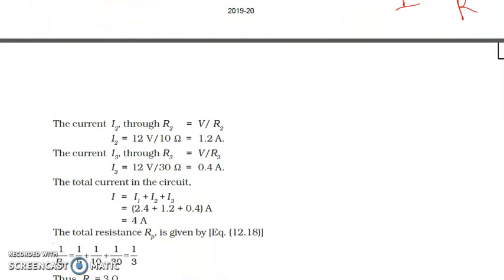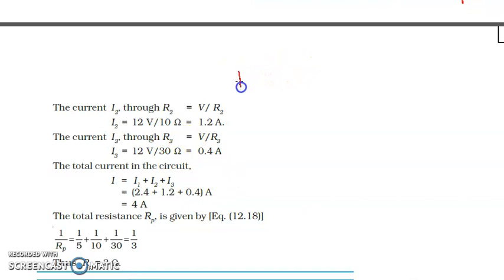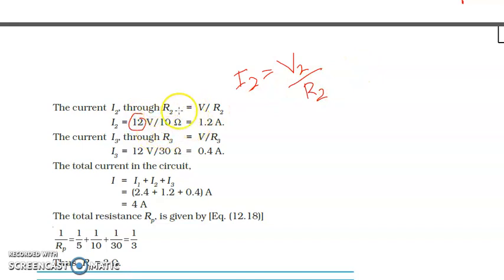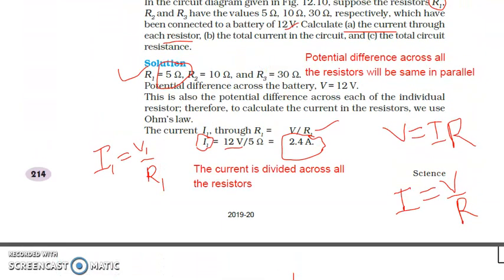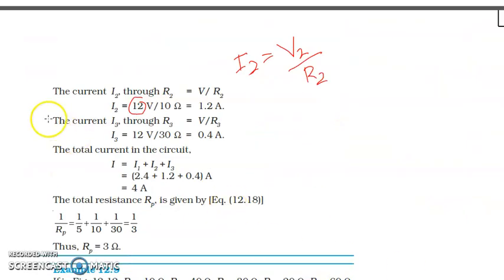Similarly, we calculate I2, the current through the second resistor. I2 = V2/R2. The value of V2 is the same as V1, that is 12 volts, and R2 is 10 ohm. So I2 = 12/10 = 1.2 ampere.